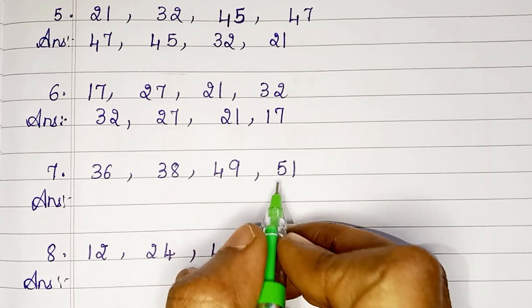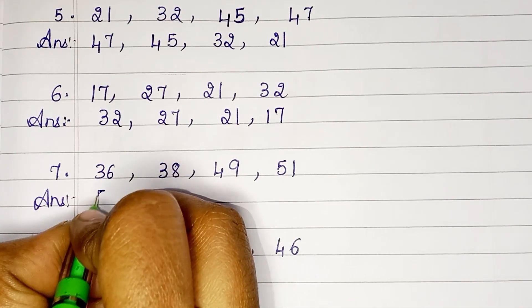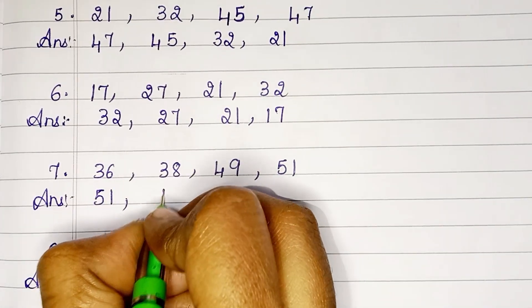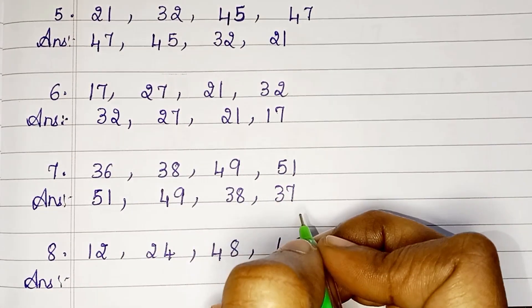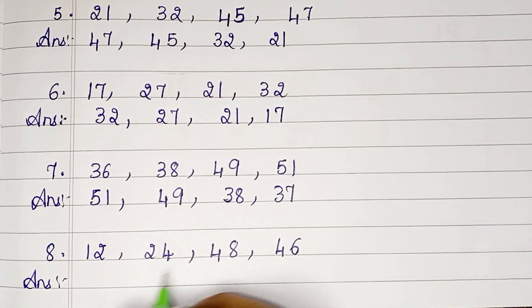The next set of numbers: 36, 38, 49, 51. In descending order: 51, 49, 38, 37.